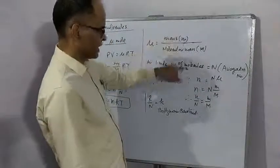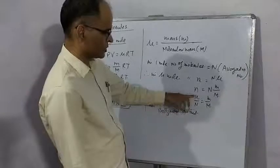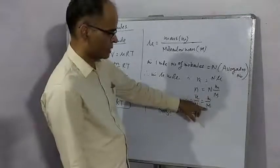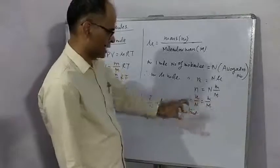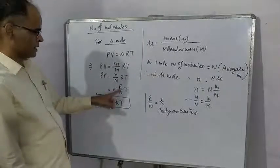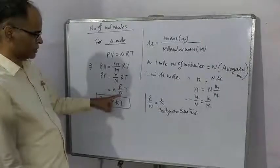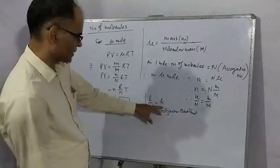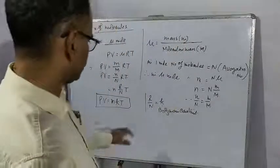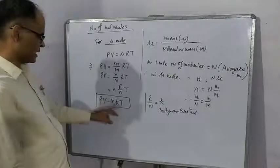But mu is equal to M by M, so we can write N by capital N. Now R by N is ratio of two constants. R is universal gas constant and N is Avogadro's number. So this ratio is called another constant, Boltzmann constant. Value is 1.38 into 10 to the power minus 23. So by this equation we can find number of molecules in given volume at given pressure and at given temperature.